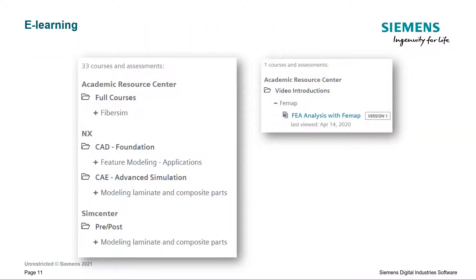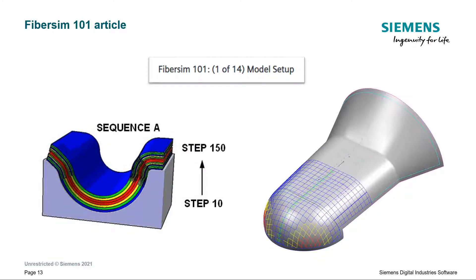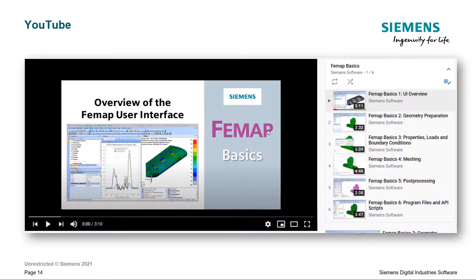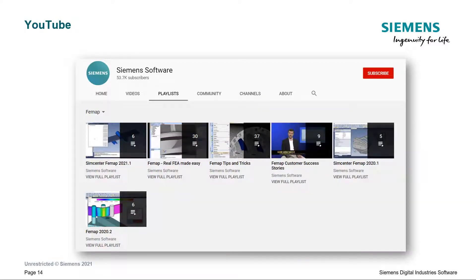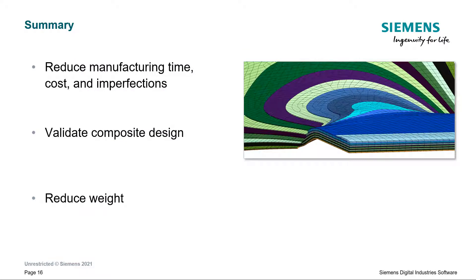To help your teams come up to speed quickly, we have a variety of resources, such as various e-learning classes. This webinar explores composite design with FiberSim, and getting started courses are available at no cost to our academic partners through Learning Advantage. The FiberSim 101 article is commonly referenced by experts as a great place to get started. On YouTube, there are videos that cover Femap basics, along with new tips and tricks, new release information, and customer success stories. The support center includes getting started guides, troubleshooting, documentation, and other resources for all the products mentioned here.